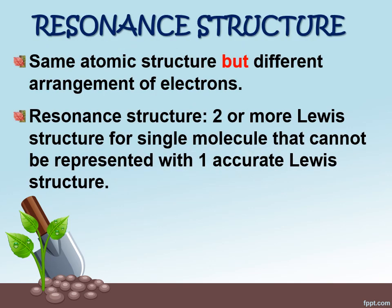When we have determined the most stable structure, the stable structure can have resonance between it. Resonance structure is happening when same atomic structure exists, but different arrangement of the electrons. The double bond will switch places.